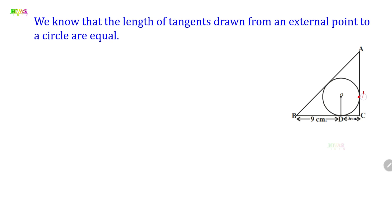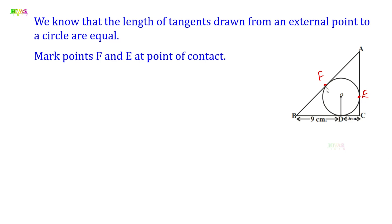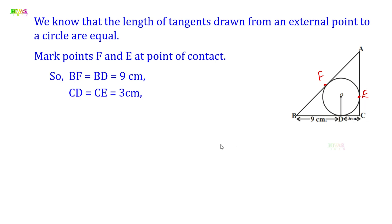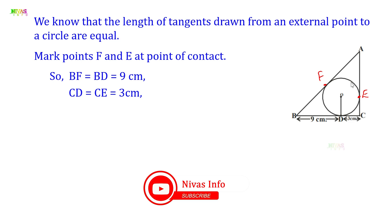Mark points F and E as points of contact on the circle. BF is equal to BD because B is the external point and the two tangents drawn from B are always equal. So BF equals BD equals 9 cm. Next, CD equals CE equals 3 cm. For AF and AE, we don't know this value, so let's assume AF equals AE equals X.